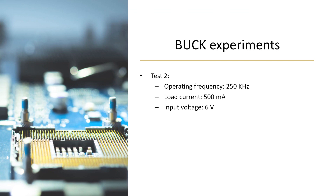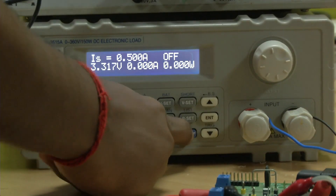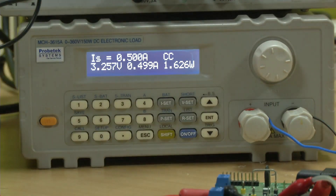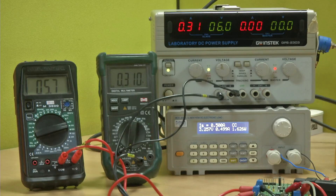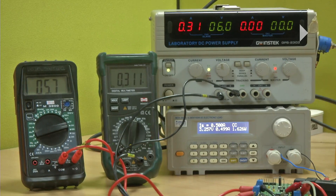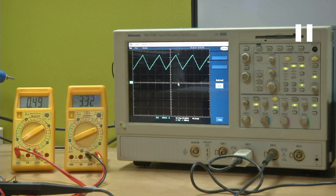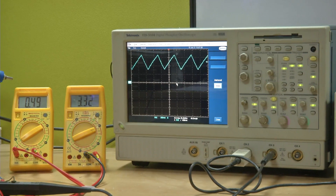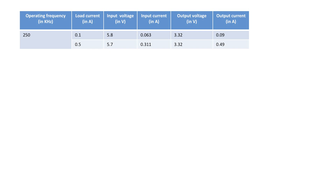Now let us change the circuit and make the load current to 500 milliamperes. Observe the current waveform very carefully. If you can find out a simple expression to calculate the inductor current based on the voltages and the inductance value, please try that — it will be a great exercise for you.